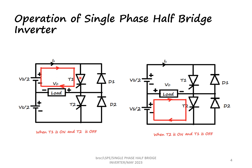When T1 is switched off (commutated) and T2 is given the gate pulse, T2 will be on. When T2 is on, the current flows from the lower source — from plus, through the load, through T2, and back to the source.